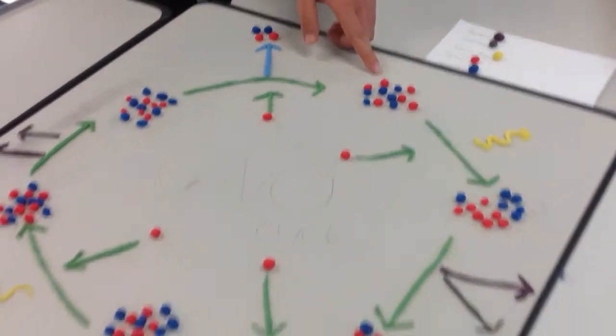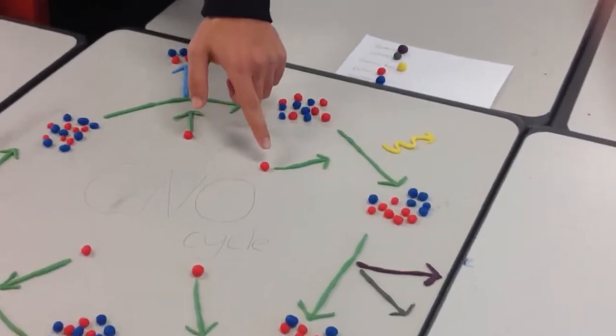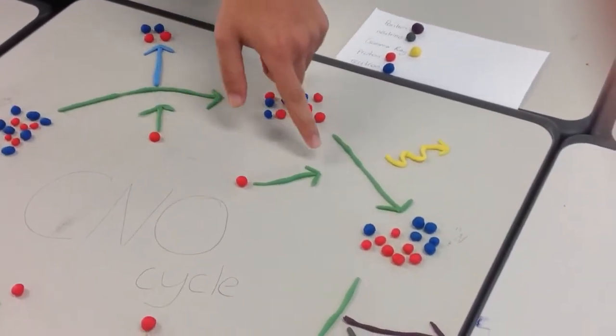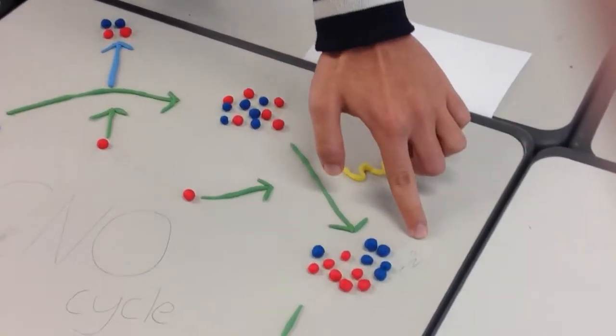So we start off with carbon 12, and once a hydrogen fuses with this, it releases a gamma ray and moves on to nitrogen 13.